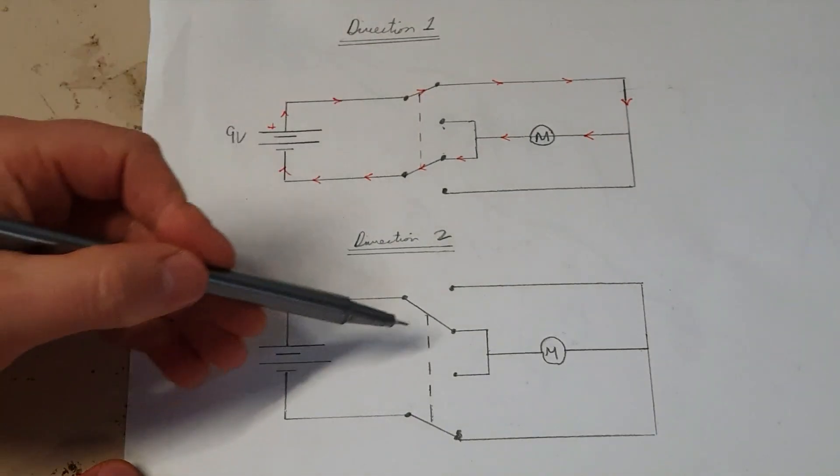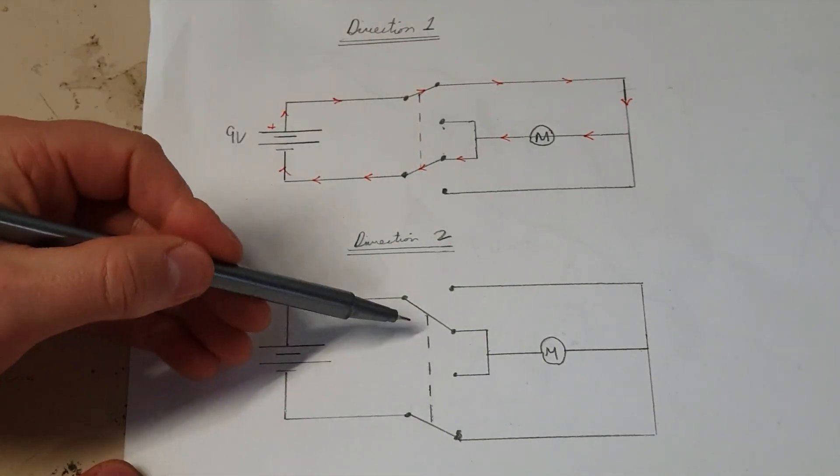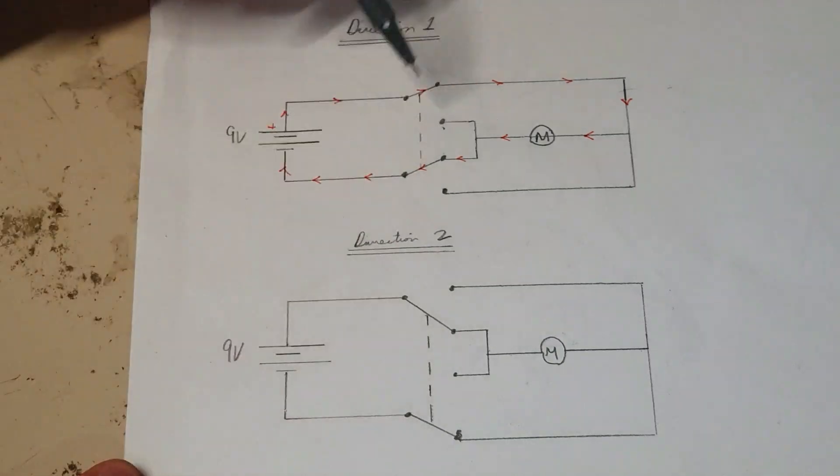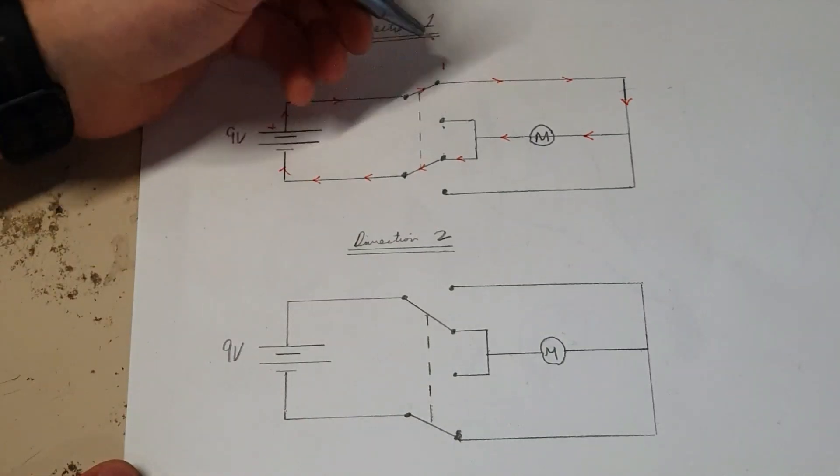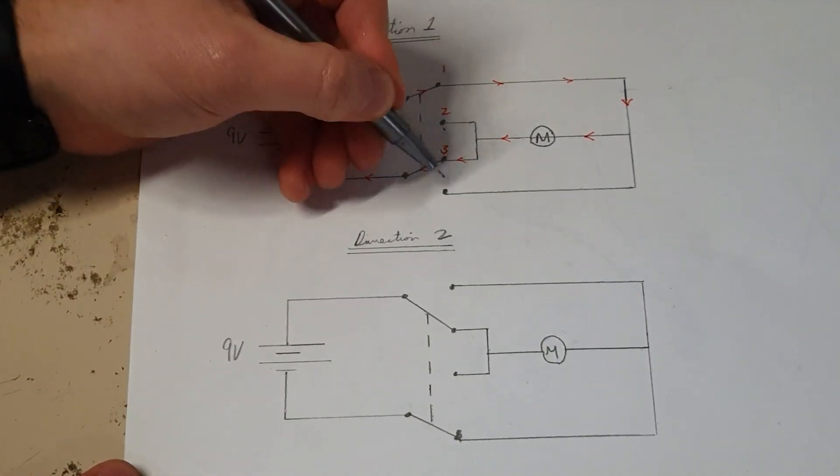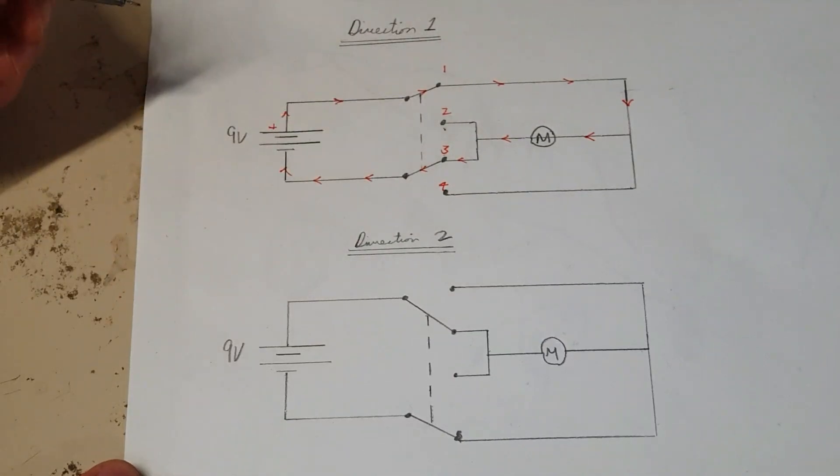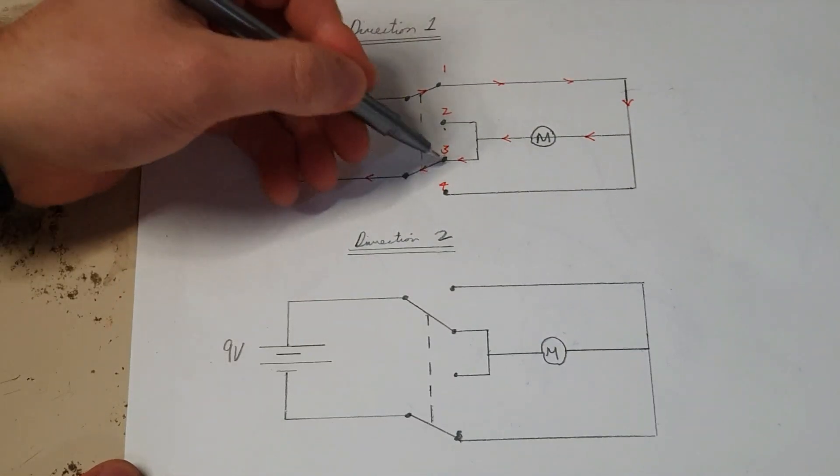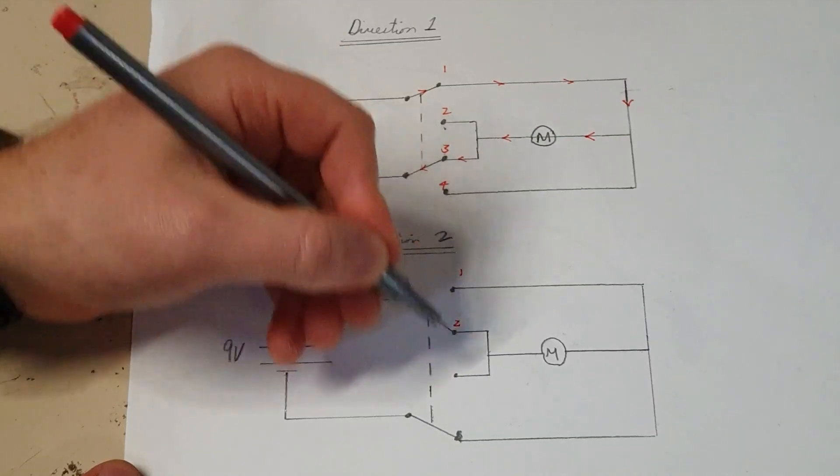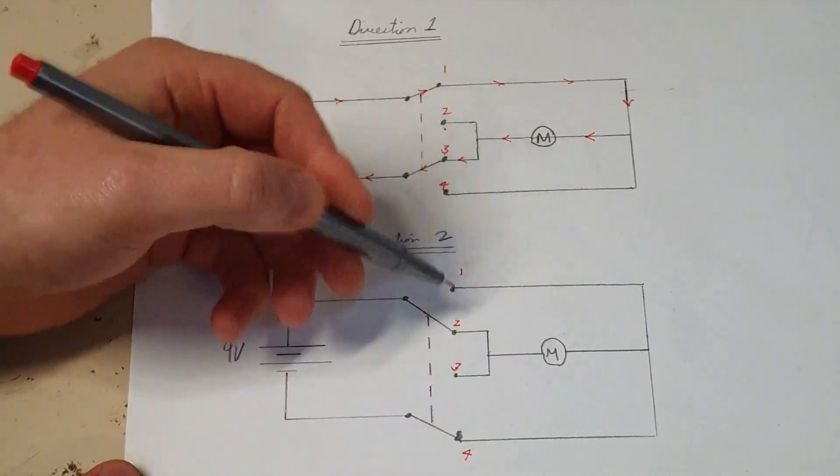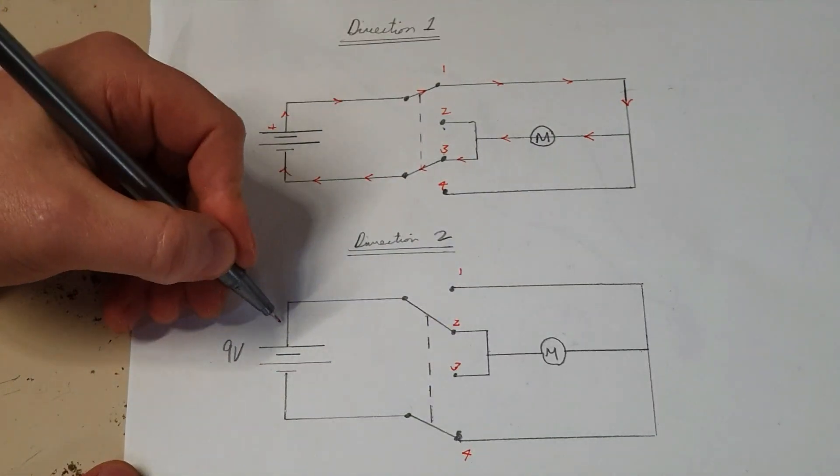So if you look then how in direction two, the poles switch because it's a double pole. So they can either be going here. If we label these one, two, three, and four here in direction one, it's at one and three. If we go here one, two, three, and four, they're at two and four. So let's track the current here.